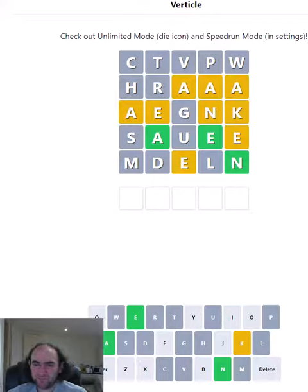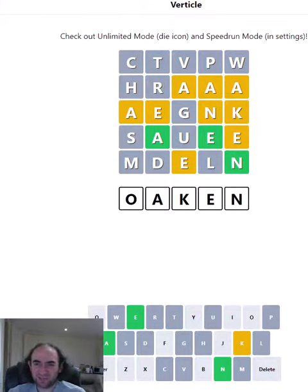It's got to be first or third. K A blank E N or blank A K E N. What on earth is this word? This should not be this difficult from this position. It's definitely not going to be Verticle in a minute. Is it oaken? This is my last guess, so it has to be correct.